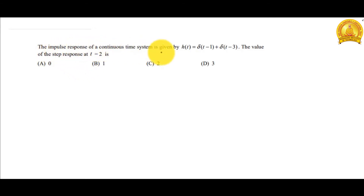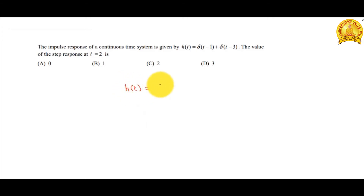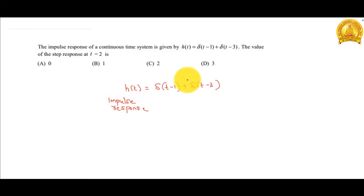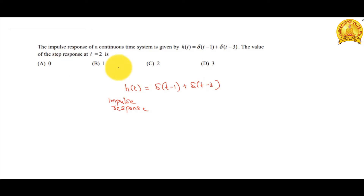The impulse response of a continuous time system is given by h(t) = δ(t−1) + δ(t−3). The value of the step response at t = 2 is to be found. Here h(t) is the impulse response — that is, for a system with an impulse function as input, the output is known as the impulse response. We have to calculate the step response.